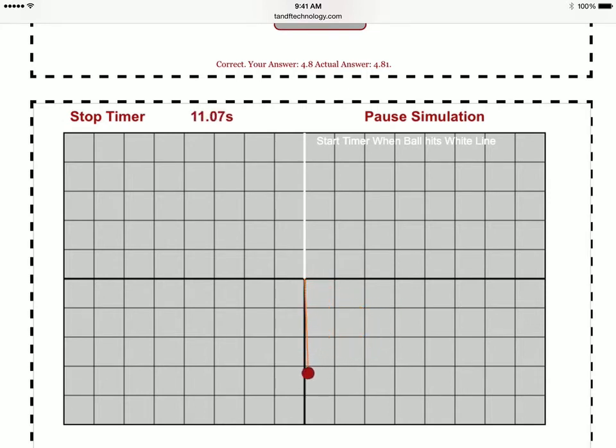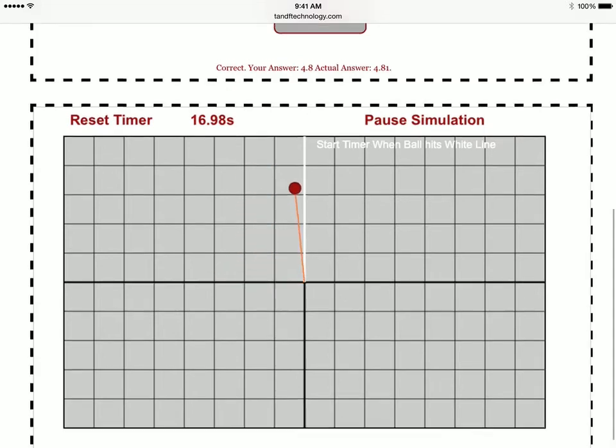Start the timer again at the white line when it's heading directly up, and stop. So about 17 second mark, it should be heading directly up.